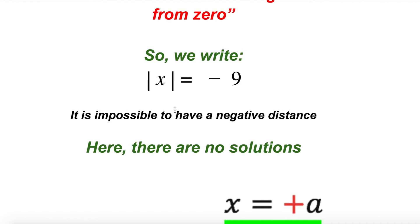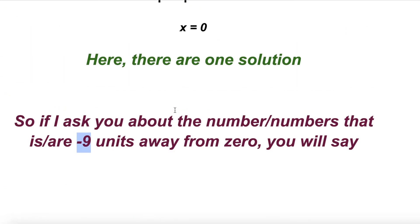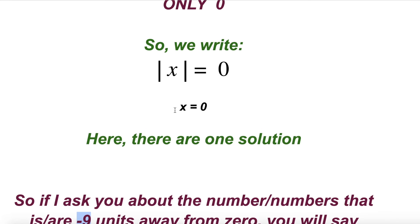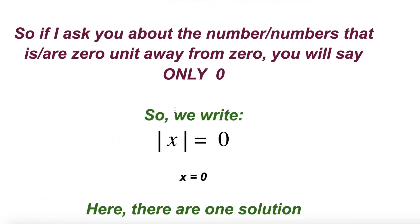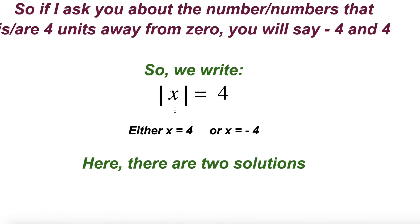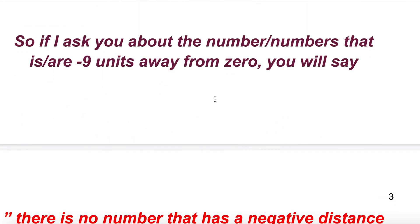As a summary: if the absolute value of a number equals a negative value, there is no solution. If the absolute value equals 0, set what's inside equal to 0 — for example, 3x plus 5 equals 0. If the absolute value equals a positive number, you say either the inside equals that positive number or it equals its negative. So you have either two solutions, one solution, or no solution, depending on the number after the equals sign.